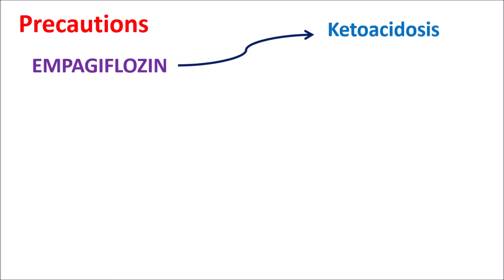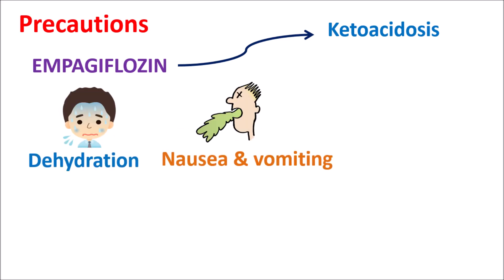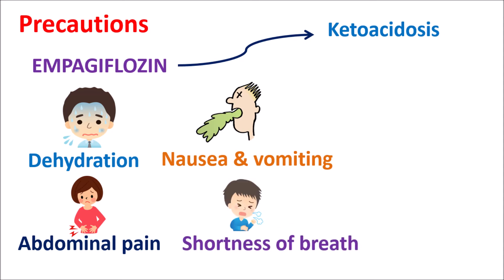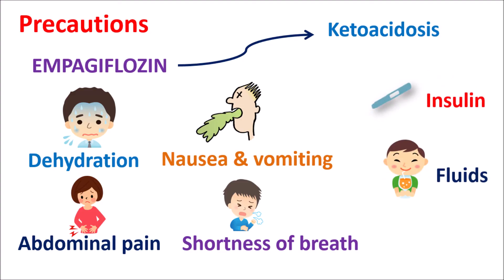Now let us discuss the precautions of this medication. One important precaution is that empagliflozin can induce ketoacidosis — a condition where ketone levels in the blood are elevated, producing symptoms like severe dehydration, nausea and vomiting, abdominal pain, and shortness of breath. If these symptoms are observed for longer periods, it may indicate elevated ketone bodies in the blood. Ketoacidosis can be treated by administration of insulin, sufficient fluids, or replacement of carbohydrates.